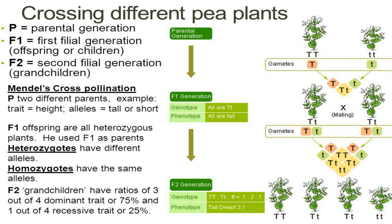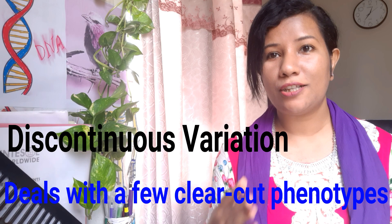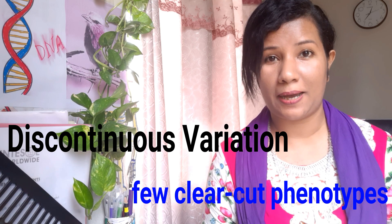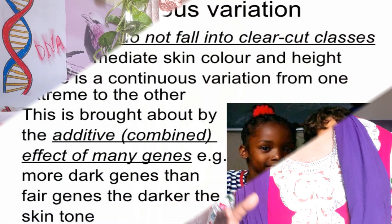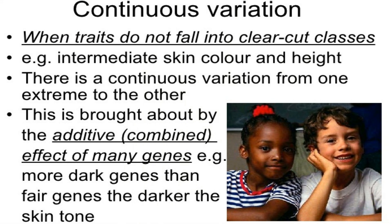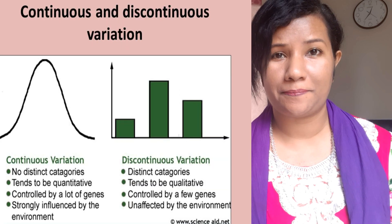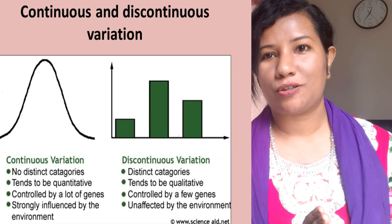There are no intermediate forms between these traits. Discontinuous variation deals with a few clear-cut phenotypes, while continuous variation deals with a spectrum of phenotypes ranging from one extreme to the other.